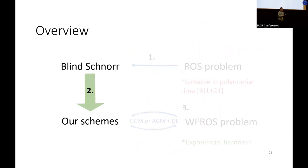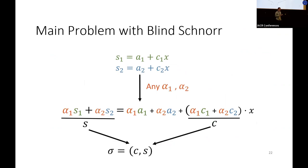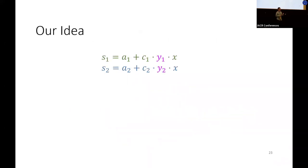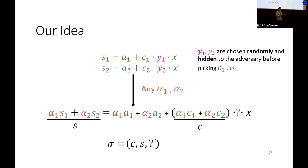So now we come to our schemes. Remember that the key step of doing the ROS attack against blind Schnorr is that we can generate a signature which is a linear combination of two sessions. Therefore, our idea to avoid it is to simply add a Y to this equation. Suppose the y_1 and y_2 are chosen randomly and hidden to the adversary before picking c_1 and c_2. We find it is not possible anymore to combine two sessions to get a signature, because we don't know how to pick the y's here to make the equation hold.